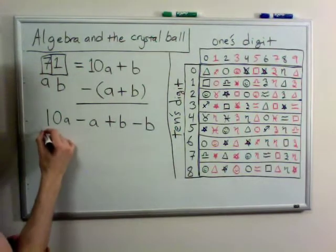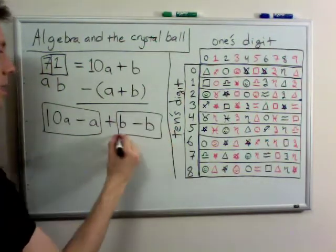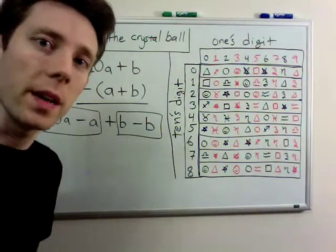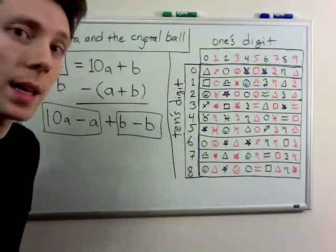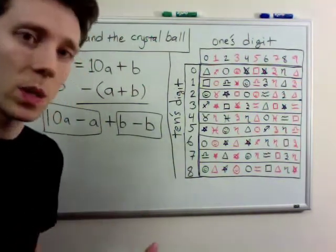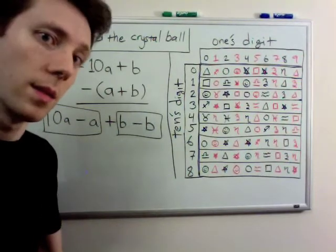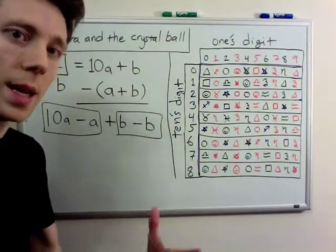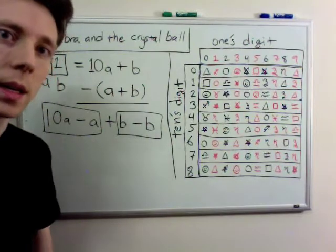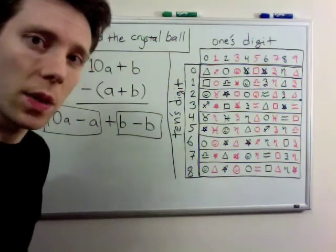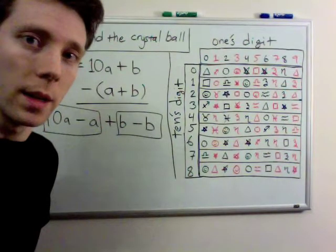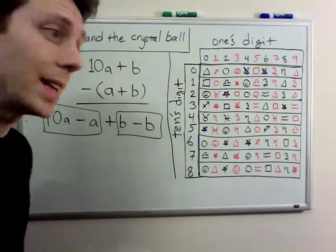Okay, now look at this part and this part here. On the left, I have 10a minus a. So, if I take 10 times a number and then I subtract that number from the result, 10a minus a, it's the same thing as if I just took 9 copies of that number. So, it's the same as 9a.